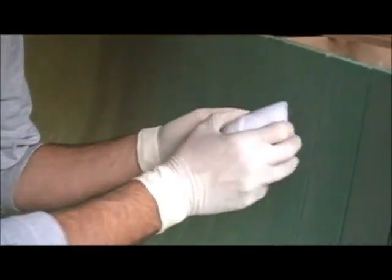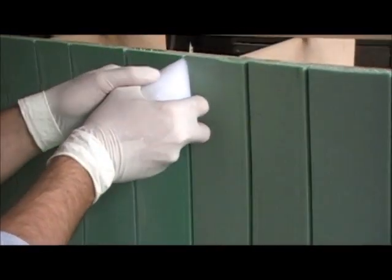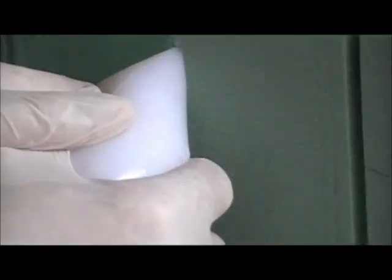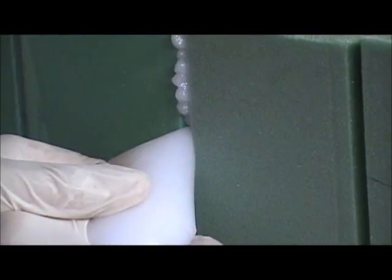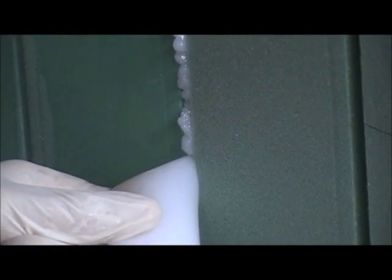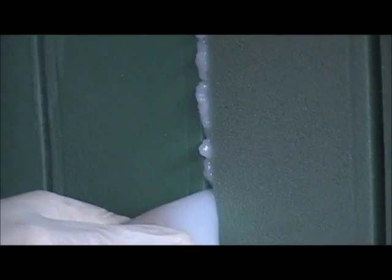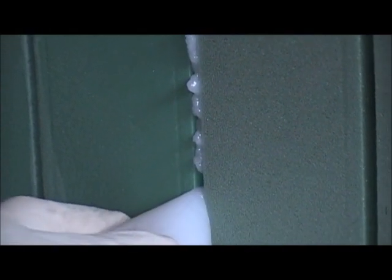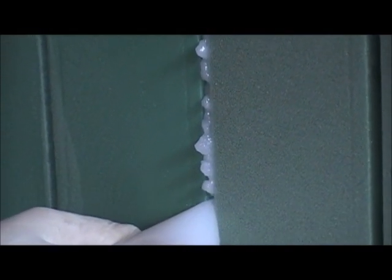For gluing the planks, we mix up a batch of thickened epoxy and we put it into a ziploc bag, a pastry bag, whatever works. And we slowly push the grout into the gap created by the bevels.